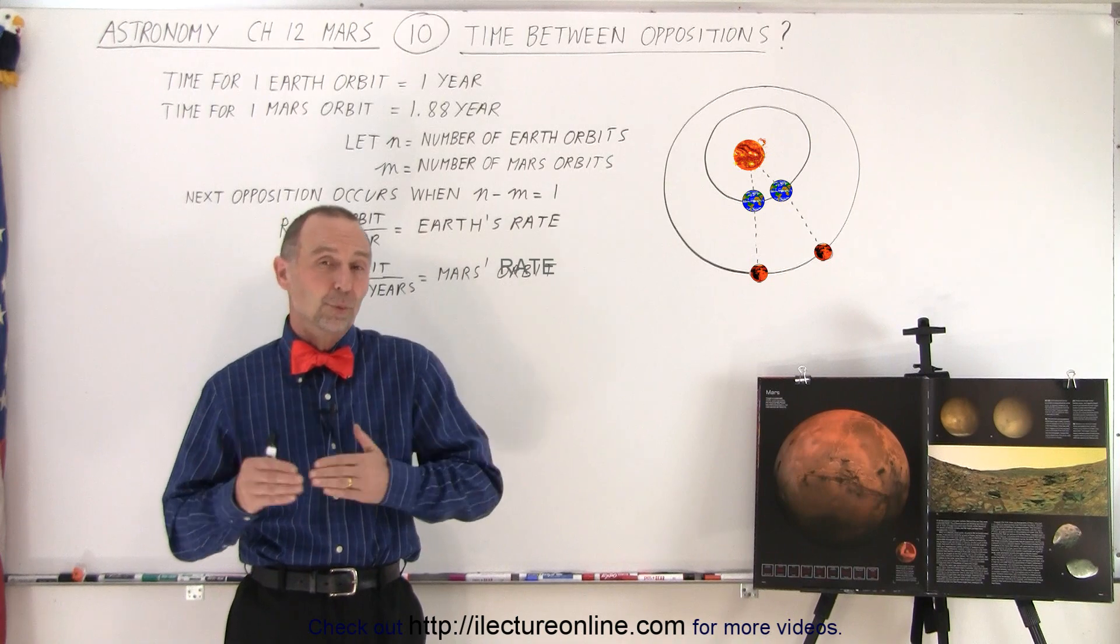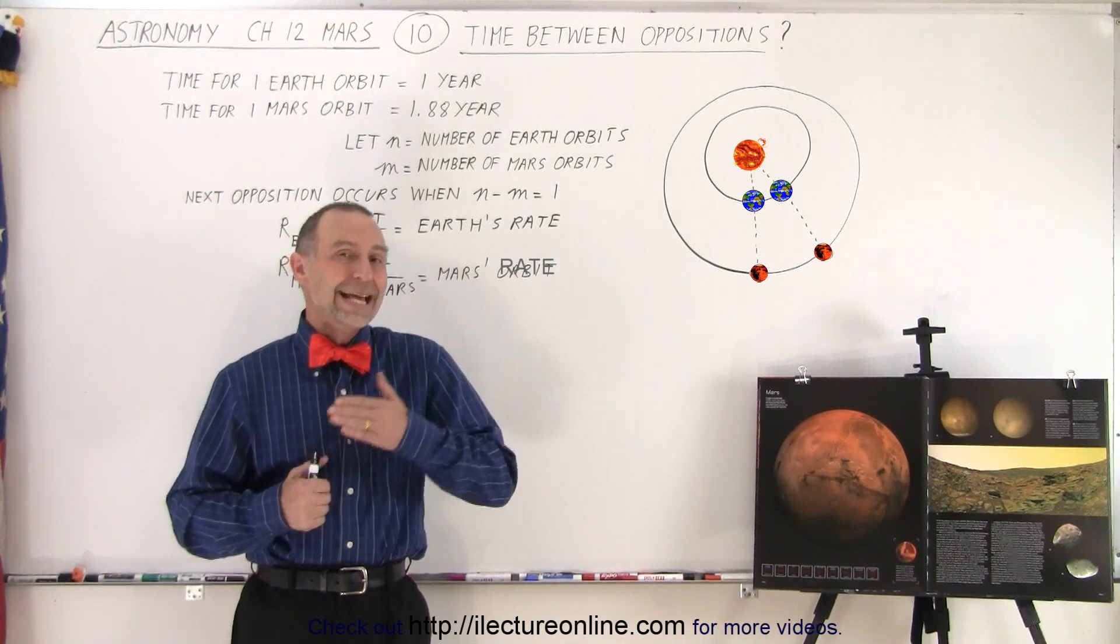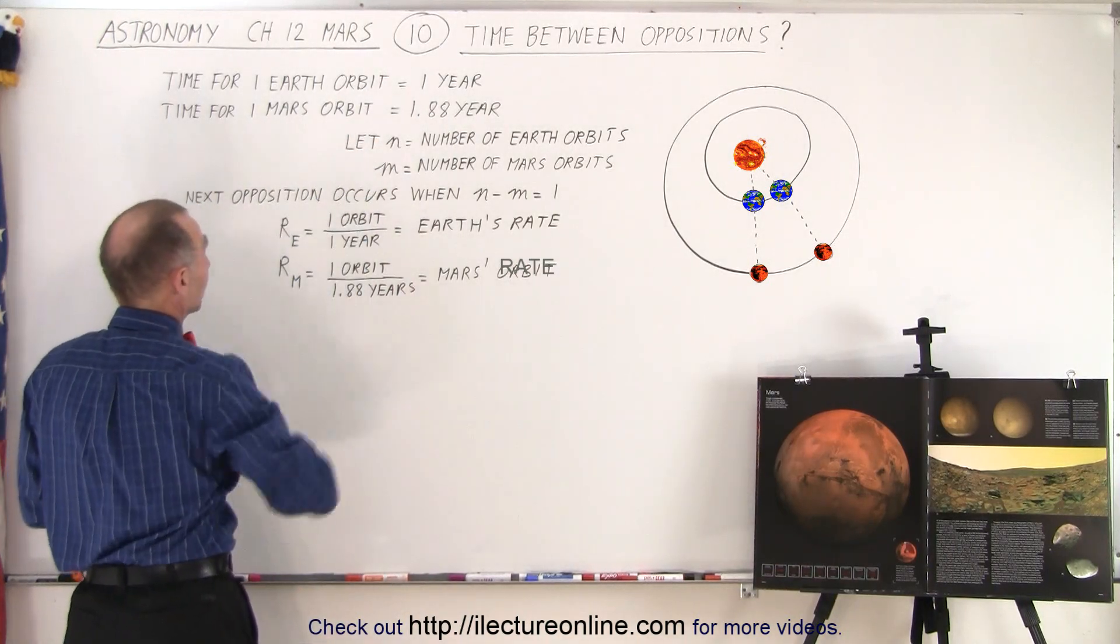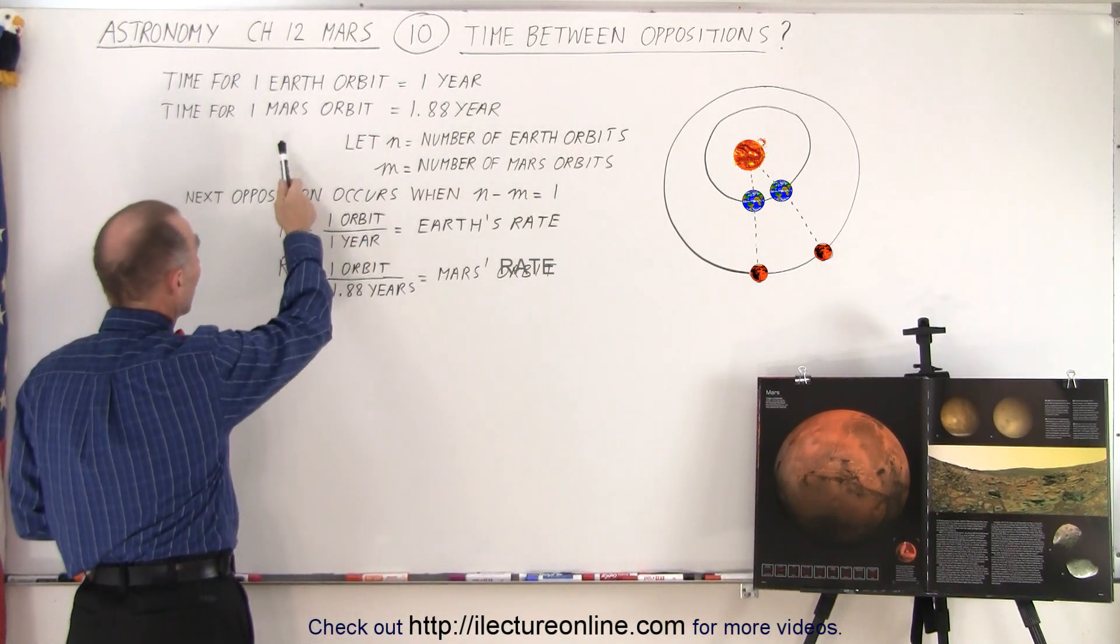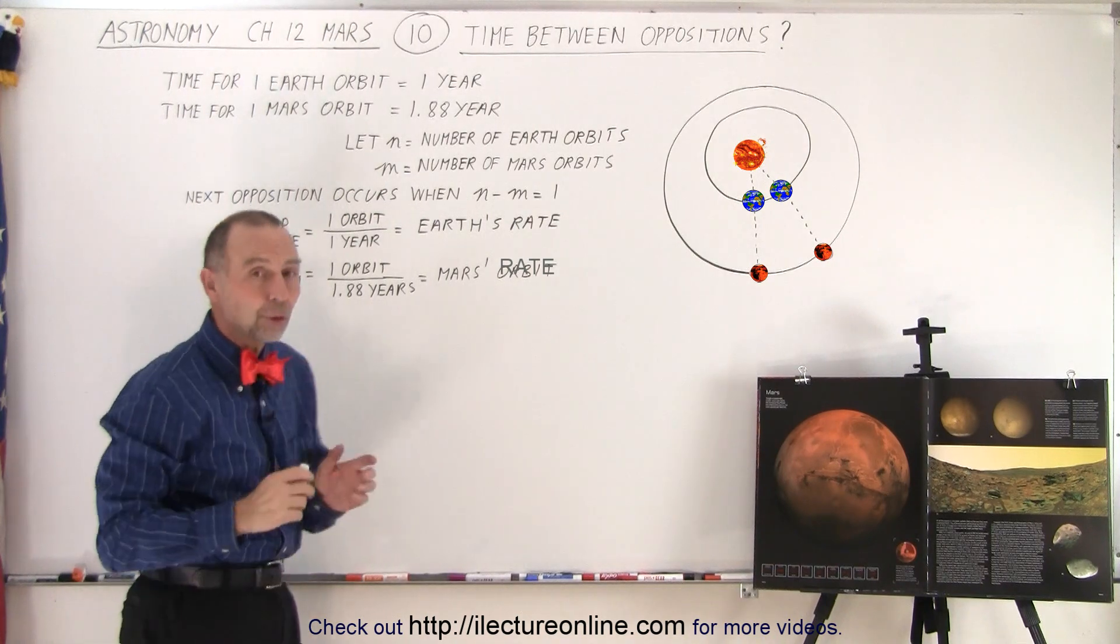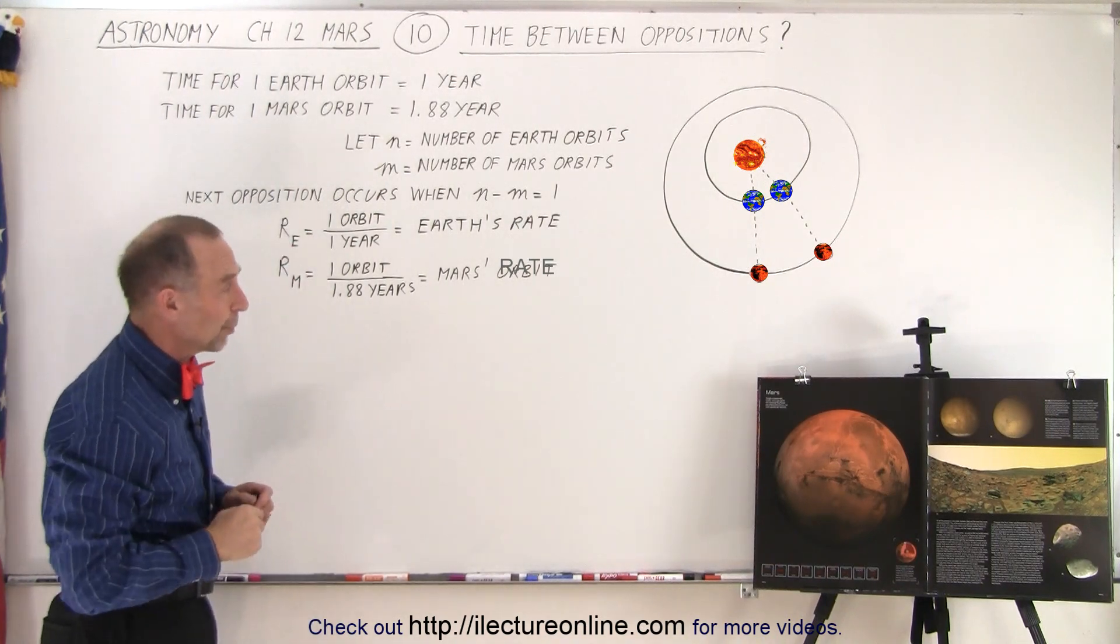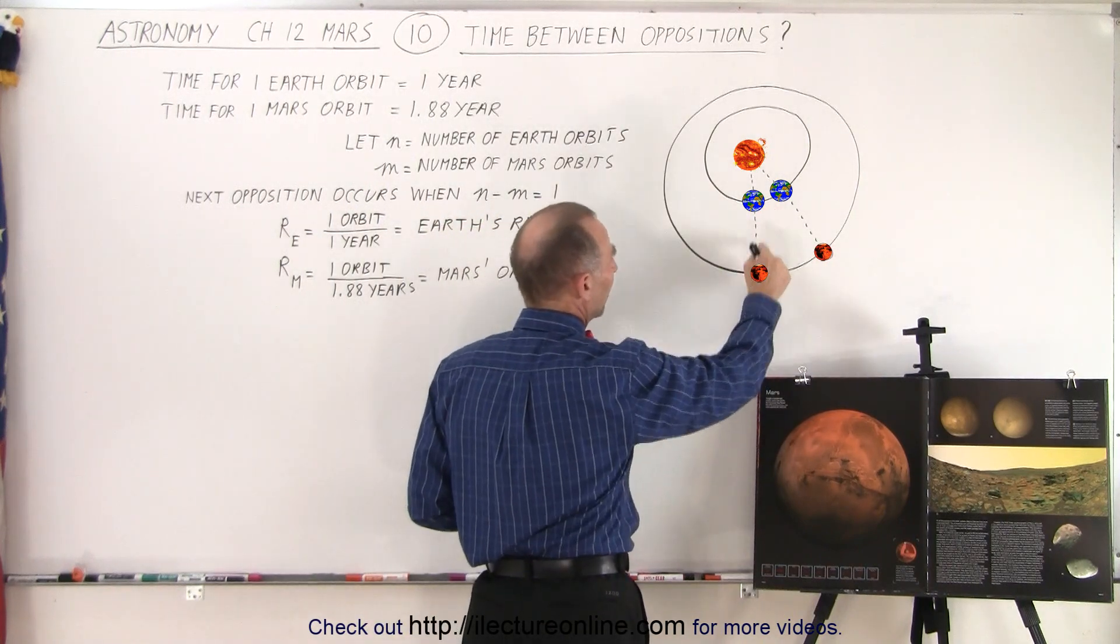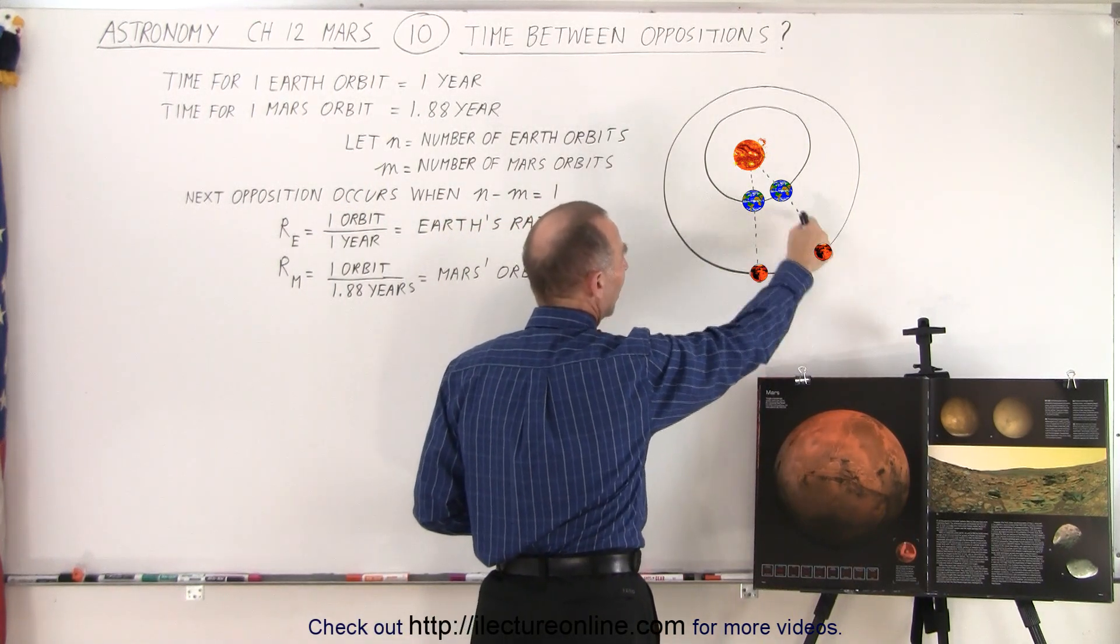How much time elapses between one opposition and the next opposition? Keeping in mind that it takes one year for Earth to make one orbit around the Sun, and it takes Mars 1.88 Earth years to make one trip around the Sun. So let's say that at this moment we see Mars at opposition to Earth, when will the next opposition occur?